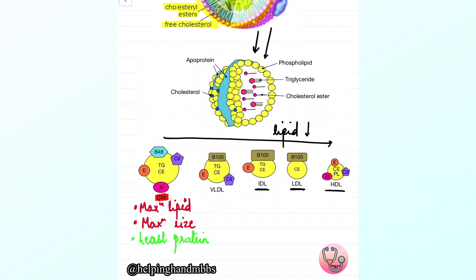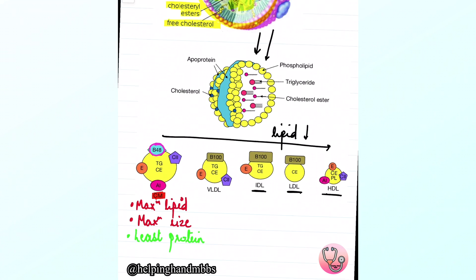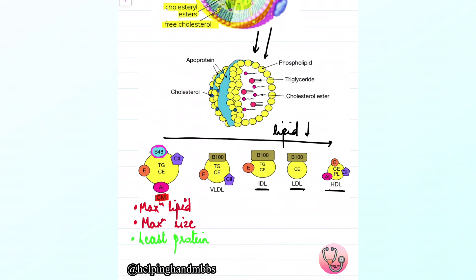The special apoprotein on chylomicron is ApoB48, which is exclusively present on chylomicron — you will not find ApoB48 on any other lipoprotein. ApoE and ApoC2 are also present on chylomicron and are helpful in the transport of lipids from triacylglycerol to various organs and to the liver.